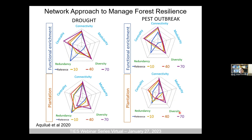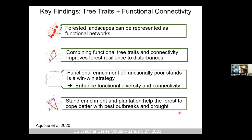In conclusion for this part: forest landscapes can be represented as functional networks. Functional traits and connectivity improve resilience to specific disturbances. Functional enrichment of functionally poor stands was a win-win strategy, enhancing functional diversity and connectivity. Both stand enrichment and plantation help forests cope with pest outbreaks and drought. There is great potential here, and we continue with other groups to test this with more complex disturbances and intensities.